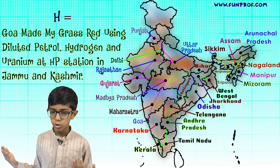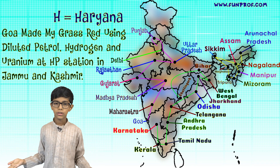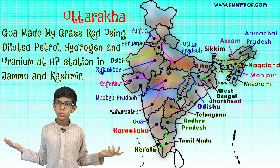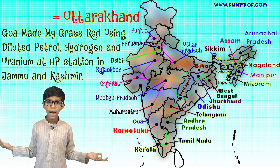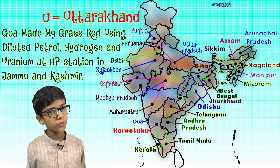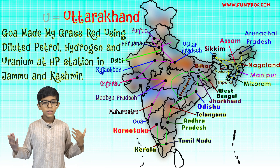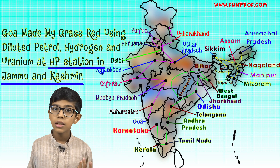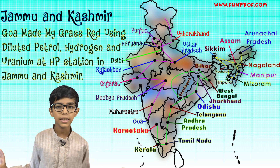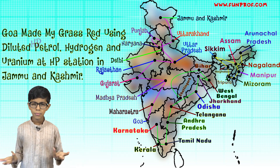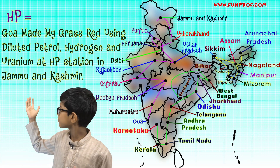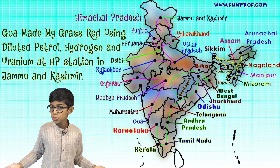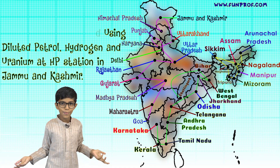H for hydrogen and H for Haryana. U for uranium and U for Uttarakhand. Then HP station — H for Himachal and P for Pradesh, i.e., Himachal Pradesh. HP station is a petrol station. And Jammu and Kashmir remains as is in the mnemonic.